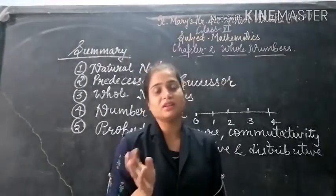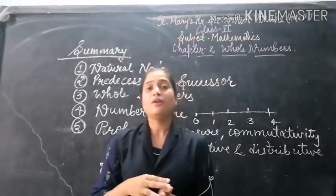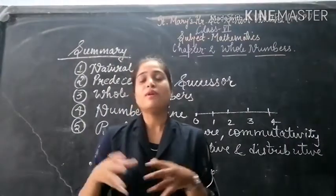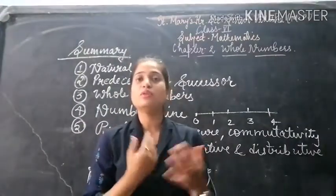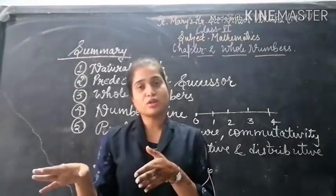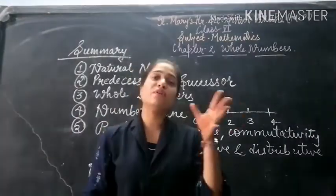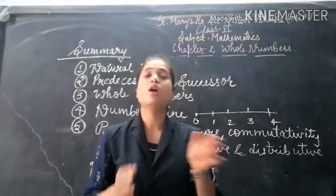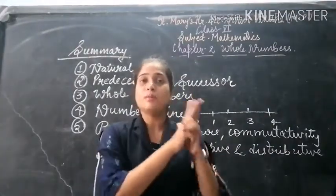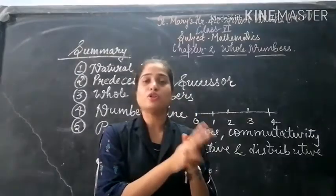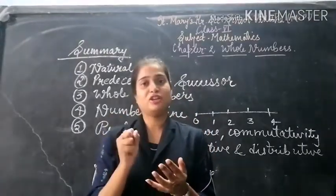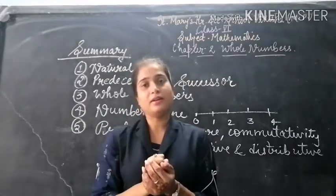The same applies for multiplication. If we take two numbers, suppose 3 and 5, when we multiply 3 by 5 we get 15. And 3, 5, and 15 are all whole numbers. So when we multiply two whole numbers, we get the product as a whole number. Whole numbers are closed under addition and under multiplication.